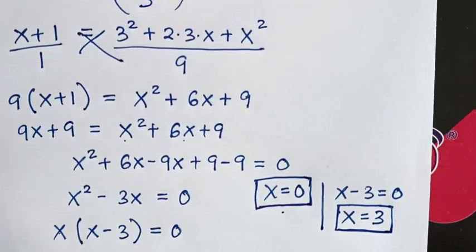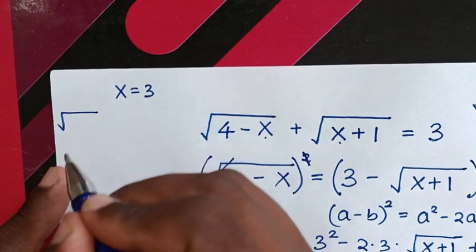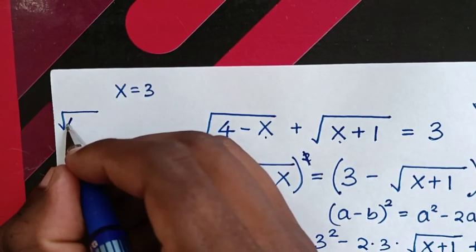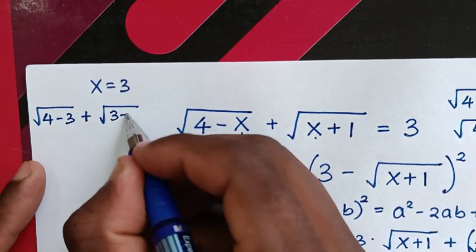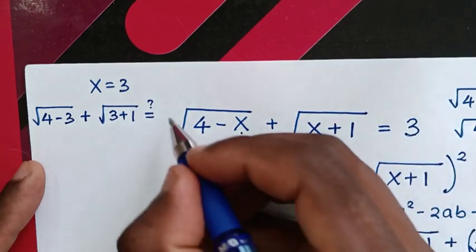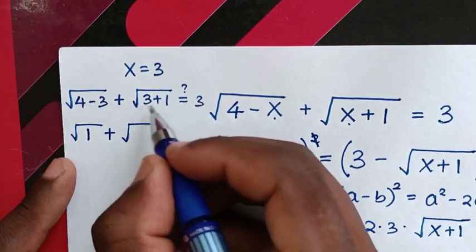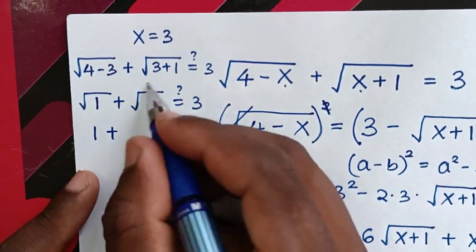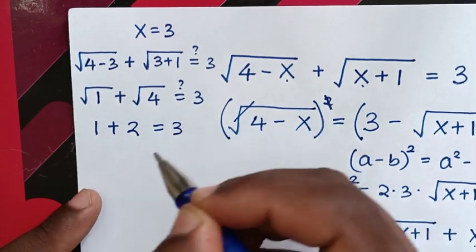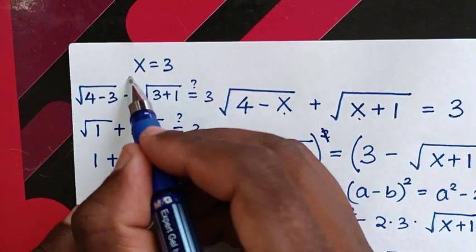Now let's check x equals 3. Substituting into the original equation: square root of (4 minus 3) plus square root of (3 plus 1), which is square root of 1 plus square root of 4, equals 1 plus 2, equals 3. The left side equals the right side, so x equals 3 is also confirmed.